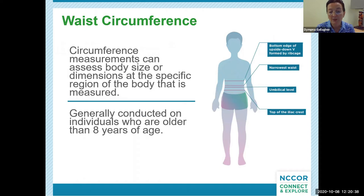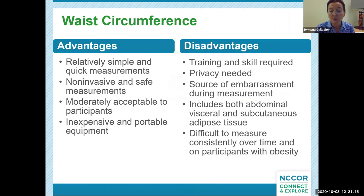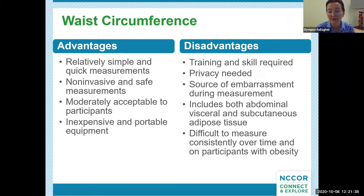Circumference measurements assess body size or dimensions of the specific region of the body measured. Waist circumference, or abdominal circumference, provides information on central body fat distribution. It is generally conducted on individuals older than eight years of age. There are several different sites noted in the literature, so it's important to be consistent so that the same anatomical location is measured within any one specific study. Advantages include relatively simple and quick measurements, non-invasive and safe, moderately acceptable to participants, and inexpensive portable equipment. Disadvantages include training and skill required, privacy is needed, it may be a source of embarrassment, it includes both abdominal visceral and subcutaneous adipose tissue, and it is difficult to measure consistently over time and on participants with obesity.